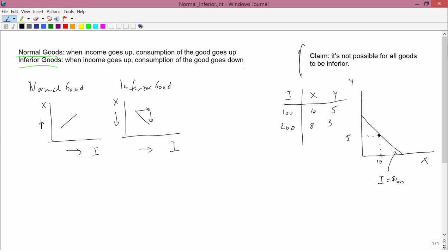And we have x equals 10 and y equals 5. And we have a new budget constraint corresponding to an income of 200. And x has gone down to 8, which is here, and y has gone down to 3, which is here. And so the new point is here.